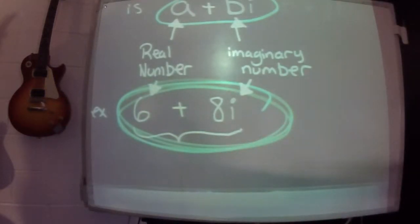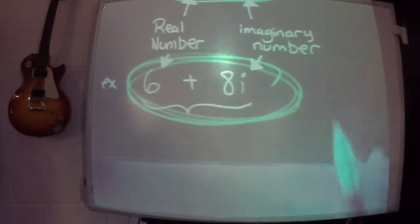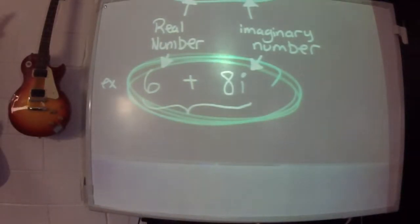Six plus eight i together, circled, is a complex number. It's got the two parts needed. The real part, the imaginary part.